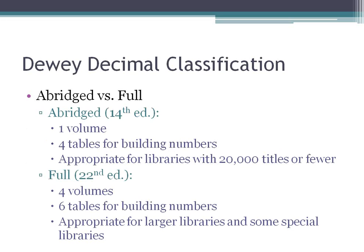The abridged version has only one volume and just four tables, and it's generally appropriate for libraries with 20,000 titles or fewer — we're talking about nonfiction titles. The full version, which we're not going to be working with in this class, is much more expanded. It has four volumes and six tables, and it's appropriate for larger libraries or special libraries that focus heavily on a certain topic.